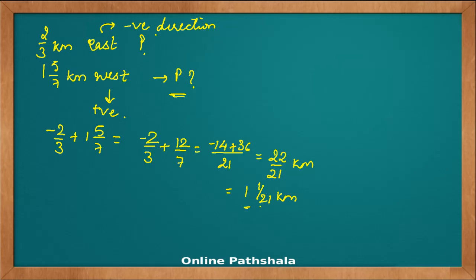Now this is a positive number, which is my positive direction, the west. So the person is 1 1/21 kilometers west from P.